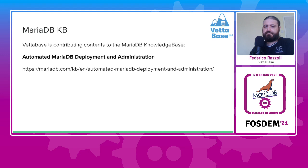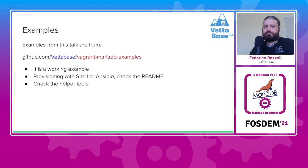If you don't know the MariaDB Knowledge Base, I really suggest you take a look at it because it's great. I can proudly say that the database is contributing to it with a new section about automating MariaDB deployments and administration, and of course you can find a section about Vagrant. All examples you will see in this presentation you can also find on GitHub — note down this URL. You will find a working example using both shell and Ansible for provisioning the machine.